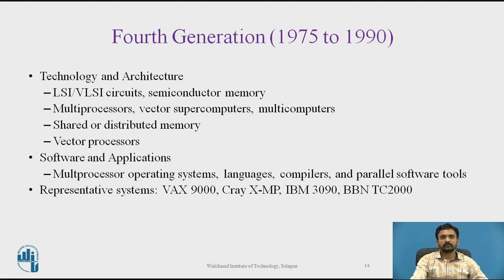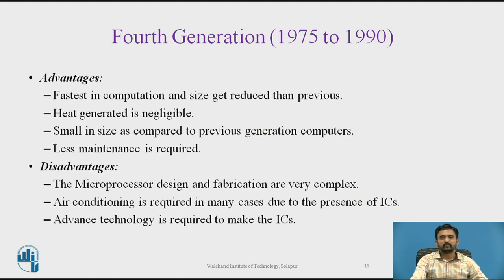In the fourth generation, from 1975 to 1990, microprocessors were invented as single VLSI chips. Main memory chips of 1 MB plus memory addresses were introduced as single VLSI chips. Cache memory was invented and placed within the main memory. VLSI and ULSI greatly reduced the space required in a computer and significantly increased computational speed. Advantages include the fastest computational speed, negligible heat generation, small size, and less maintenance. Disadvantages include complex microprocessor design and fabrication, requirement for air conditioning, and advanced technology needed to manufacture ICs.